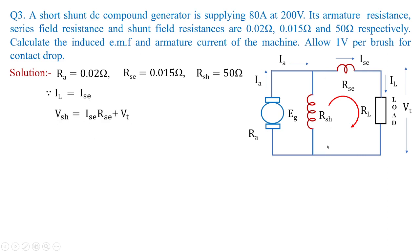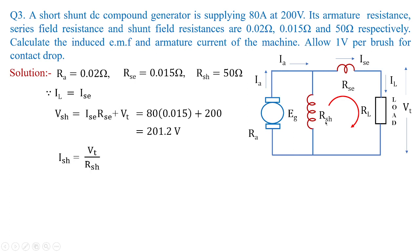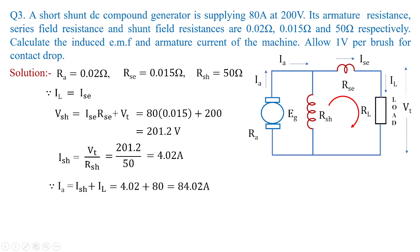Applying KVL, Vsh = IL·Rse + Vt = 80 × 0.015 + 200 = 201.2 volts. Once Vsh is obtained, Ish = Vsh / Rsh = 201.2 / 50 = 4.02 amperes. With shunt current and load current known, armature current Ia = IL + Ish = 80 + 4.02 = 84.02 amperes.